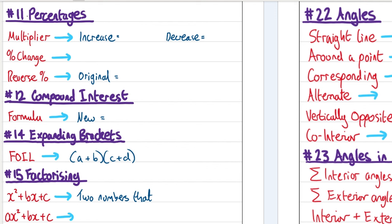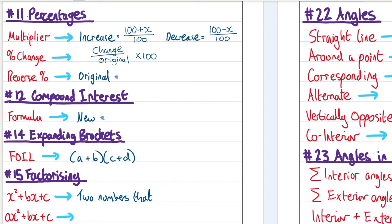Percentages. For a multiplier for increasing, take 100, add on the percentage increase, and divide by 100. For decreasing, do 100 minus the percentage decrease, then divide by 100. For percentage change, work out the change in amount, divide by the original, then multiply by 100. For reverse percentages, take the new value and divide it by the multiplier.